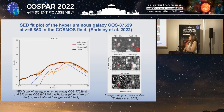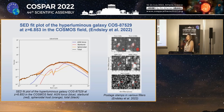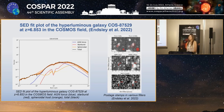Finally, I demonstrate our SED fit of the recently discovered hyperluminous galaxy COS87-529 at a redshift of 6.853 in the COSMOS field. This object appears to be similar to the HELP object shown in the previous slide, and its luminosity is also dominated by the AGN. It is amazing that we can fit a galaxy at almost a redshift of 7, because this proves the power of our method.